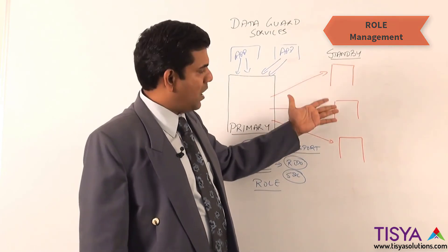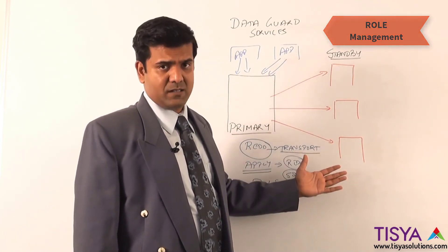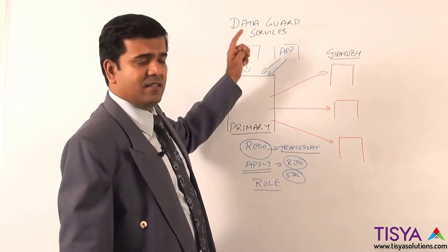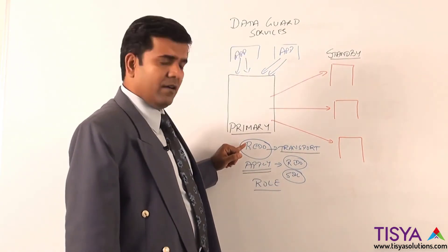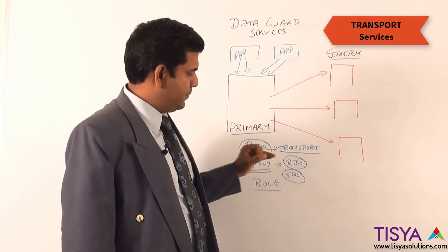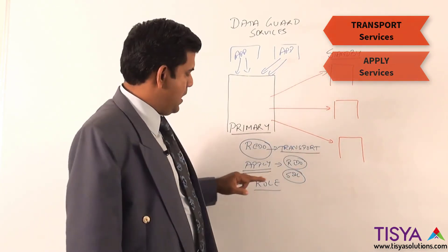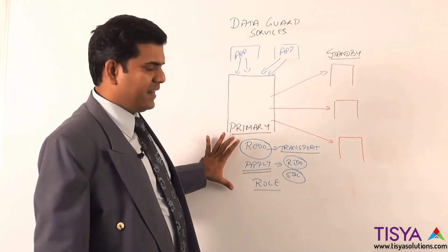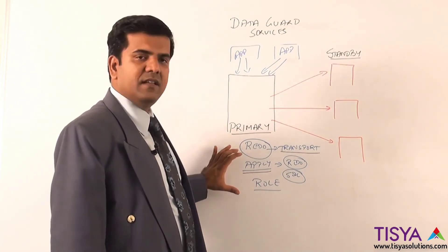So the three key services for Data Guard are: managing the transport of redo, managing the apply of redo, and role management. We will have a dedicated chapter through which we will look at all three services individually.